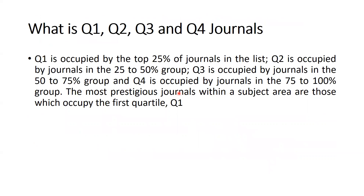Students also asked: what do you mean by Q1, Q2, Q3, and Q4 journals? Q2 is occupied by journals in the 25–50 percentile group, Q3 in the 50–75 group, and Q4 in the 75–100 percent group. This is subject area-wise. The most prestigious journals within a subject area are those in the first quartile, Q1.